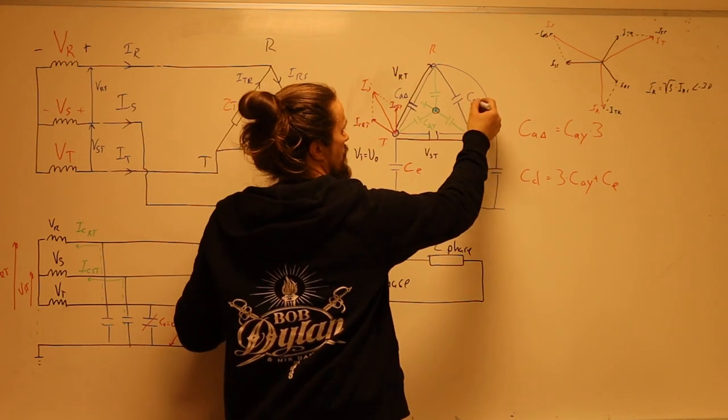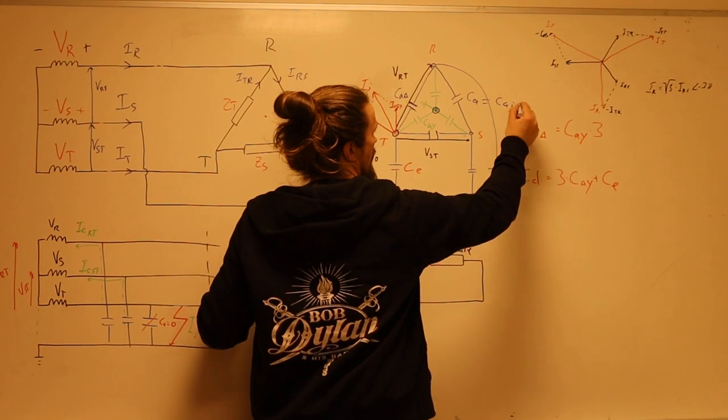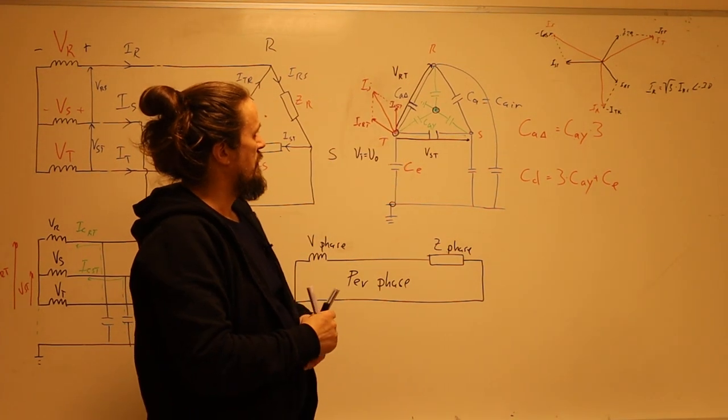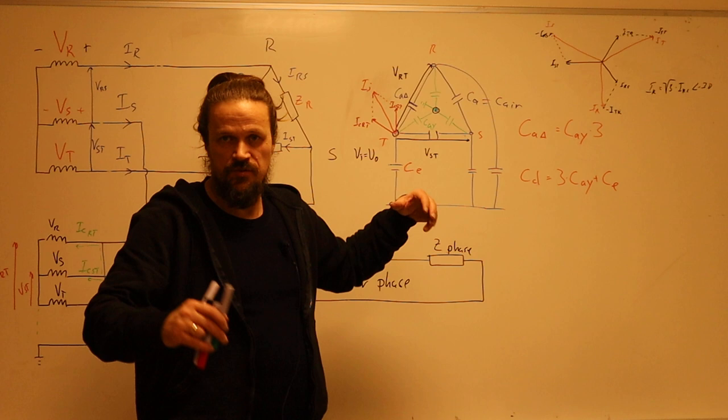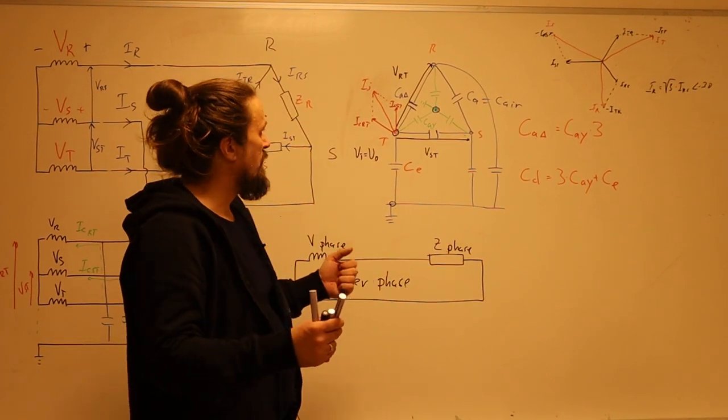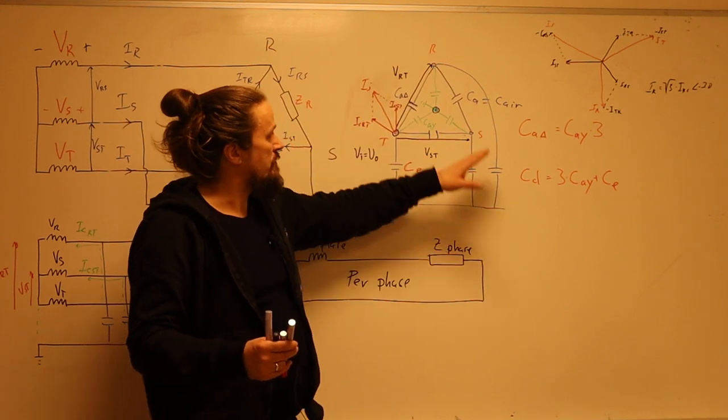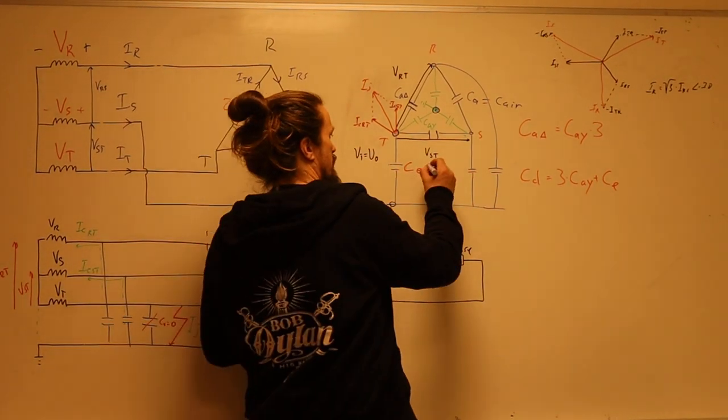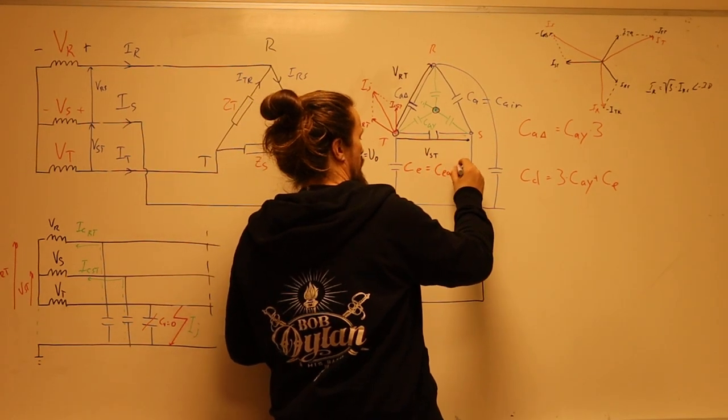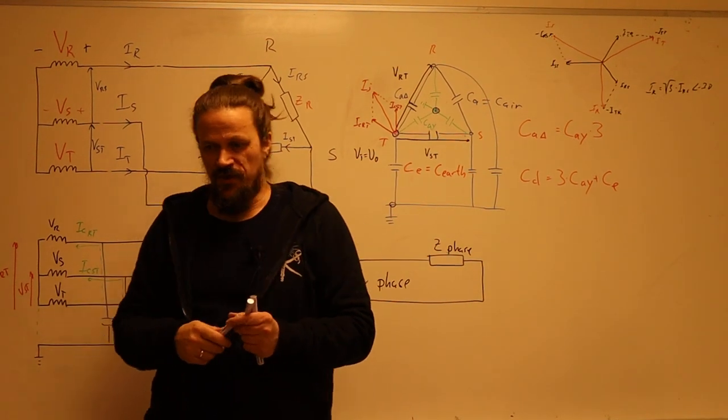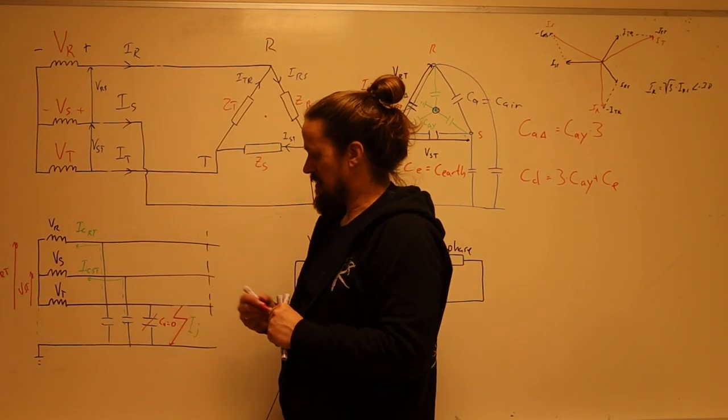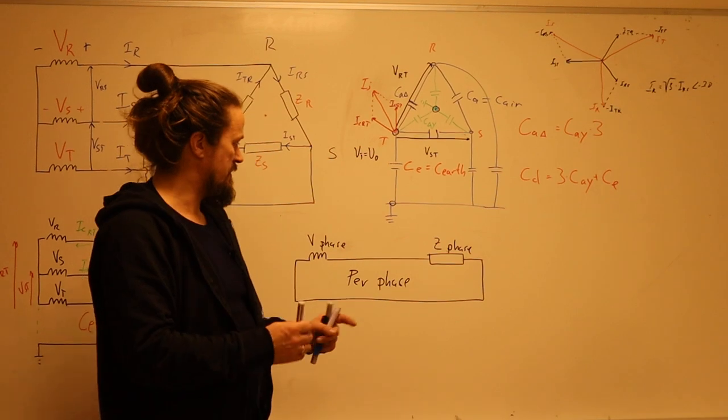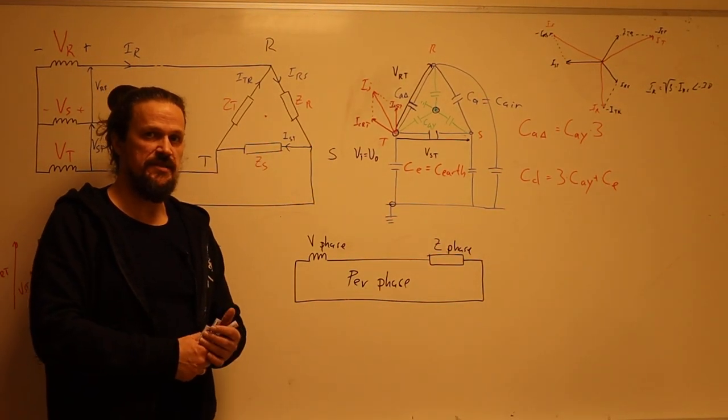That is what we call ca which also is c air, so it's the capacitance in air between the lines, and that is easy for us to compute because we know the distance and we can then know the capacitance. There is also a potential from the lines down to earth, and that's the ce. The ce is c earth, capacitance to earth. When we have these capacitances to earth, this is the ce that is represented in this per phase directly since it's a per phase quantity.